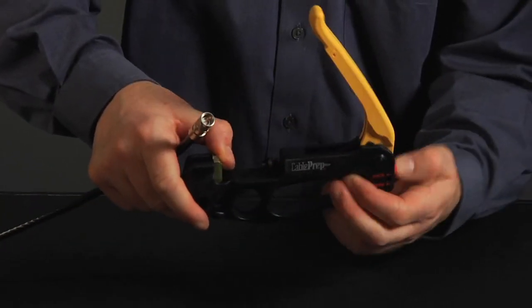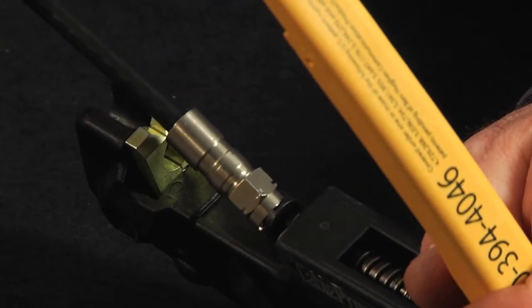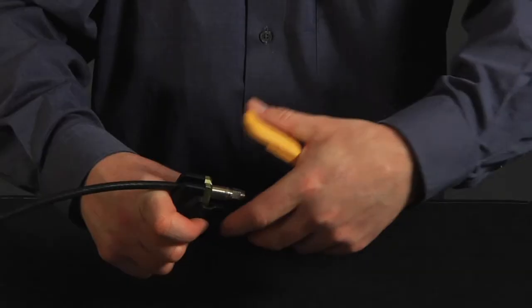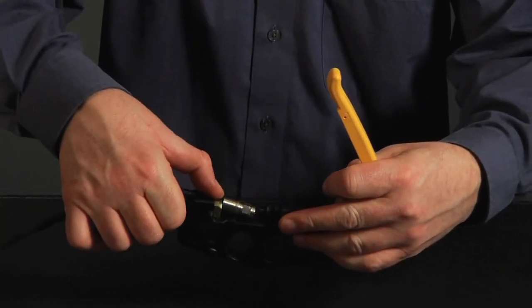Place the connector in the HPT tool and snap the cable in between the dogs. Close the handle on the HPT tool, automatically compressing the connector to the proper amount.